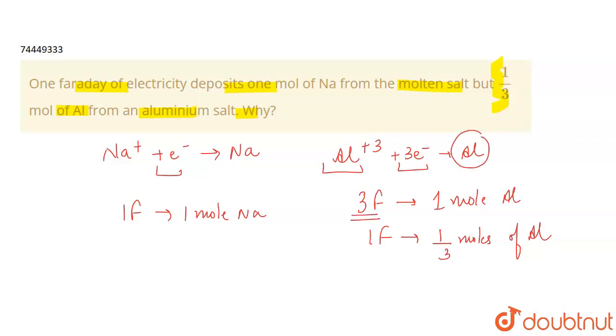So it needs three faraday of electricity. What does it mean? One faraday means 96500 coulomb of electricity.